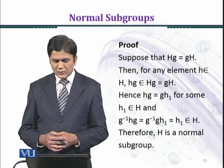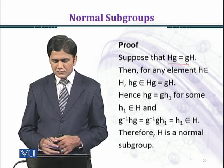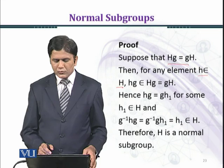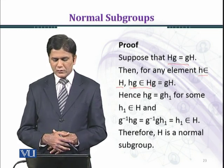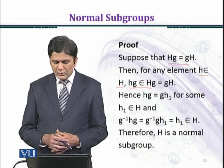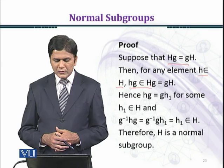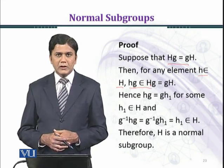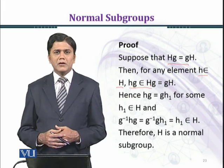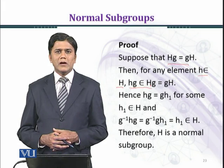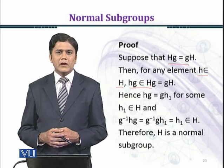Let's prove the result. Suppose that HG equal to GH. Then for any element h belonging to H, hg belongs to the right coset HG, which equals the left coset GH. Since we have assumed that HG equal to GH, the element also belongs to the left coset GH.